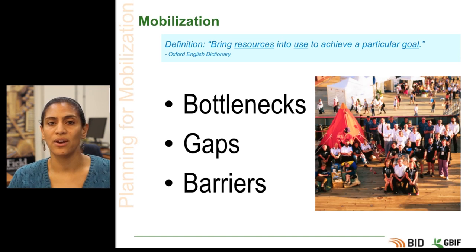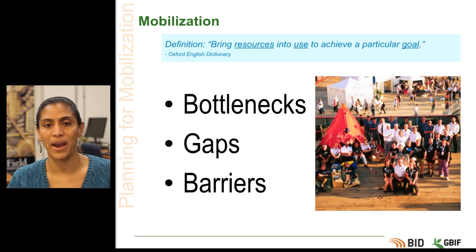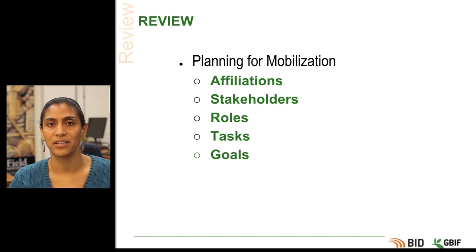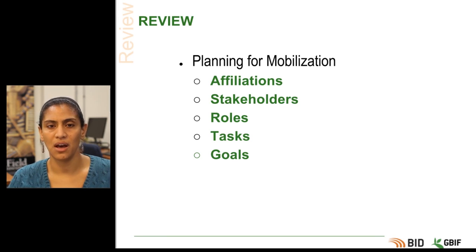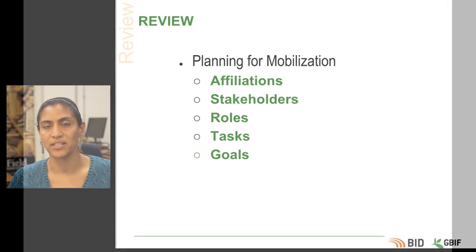Conversely, if there is no stakeholder or role in your current list to which a task should be assigned, then you have identified a gap. Effective early assessment of resources should mitigate capacity and practical barriers, whilst identifying competing goals will help to avoid institutional and cultural barriers. To review, in this section on planning for mobilization, we looked at the elements necessary to understand before you can effectively organize your project: affiliations, stakeholders, roles, tasks, and goals. We also looked at ways to organize these in order to identify possible bottlenecks, gaps, and barriers to successful data mobilization.